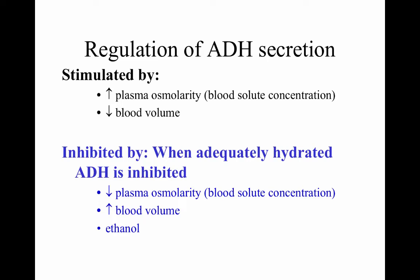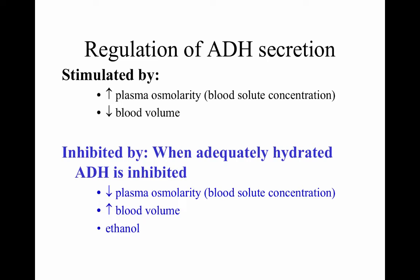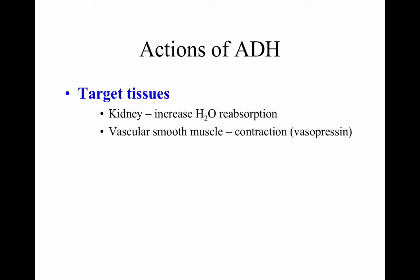Diuresis means urination; antidiuresis restricts urination. If antidiuretic hormone is inhibited, we urinate more. If we're well hydrated or drink alcohol, we move toward diuresis. Actions of antidiuretic hormone: target tissues in the kidney increase water reabsorption; in vascular smooth muscle — muscle within hollow organs and arteries — it causes contraction or vasopressin.